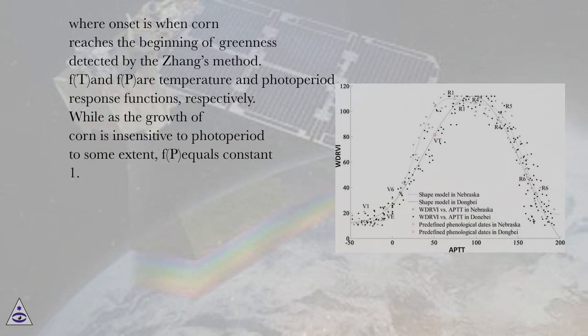fT and fP are temperature and photoperiod response functions, respectively. While as the growth of corn is insensitive to photoperiod to some extent, fP equals constant 1.